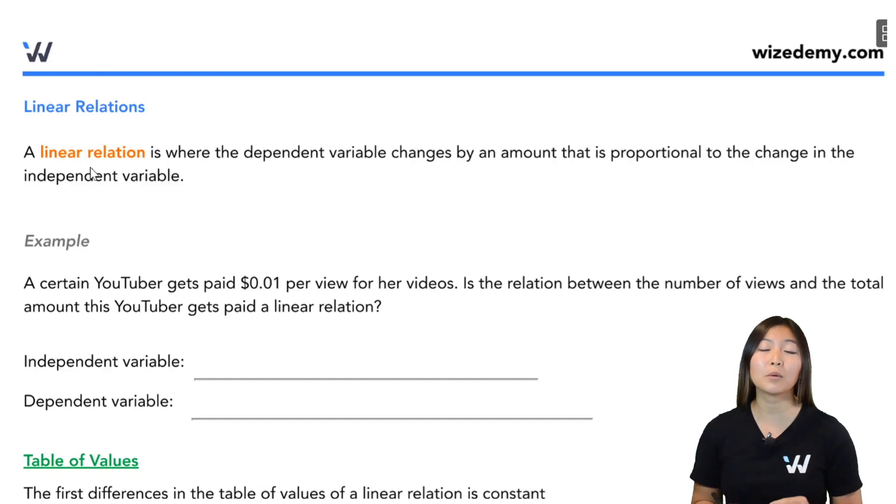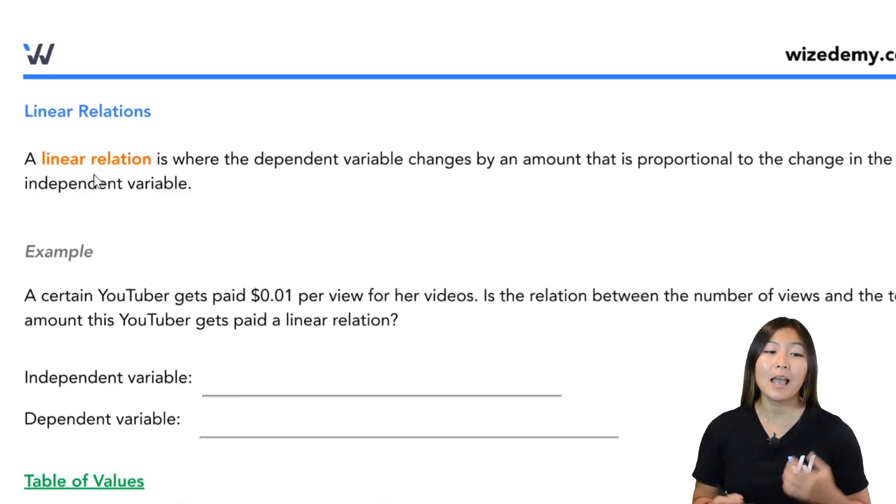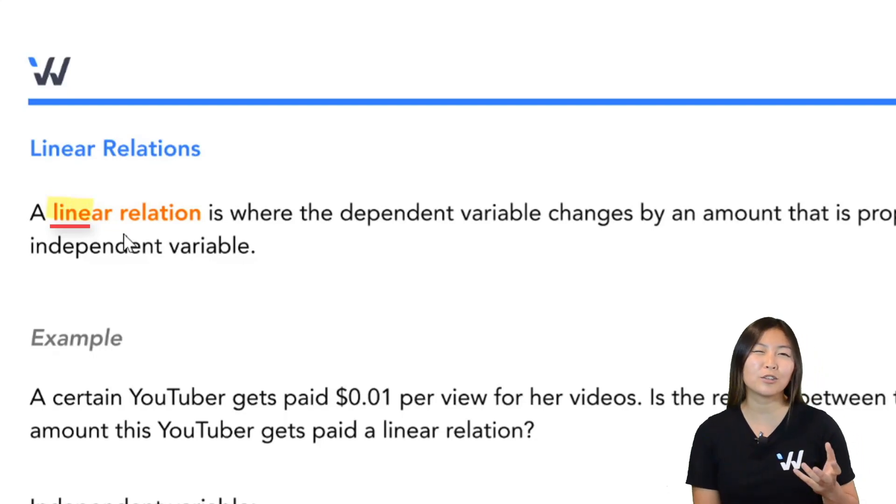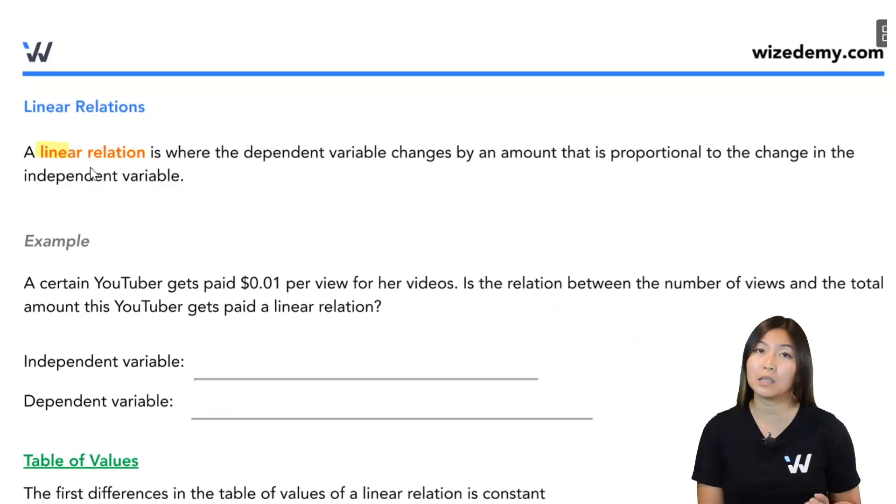There's a very special kind of relation that we're very interested in, and this is called a linear relation. The word linear has the word line in it, so a linear relation should make you think of a line. But what exactly is a linear relation? Well, a linear relation is where the dependent variable changes by an amount that is proportional to the change in the independent variable. So what that means is that if your independent variable changes by a certain amount every time, then the dependent variable should change by a certain amount every time that is the same. It's proportional to the change in the independent variable.